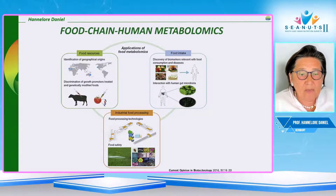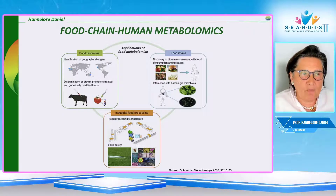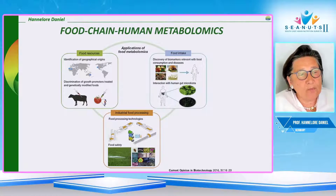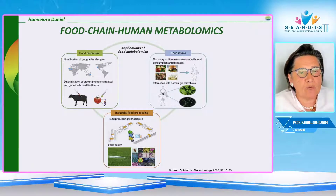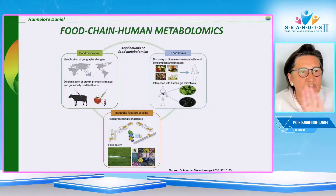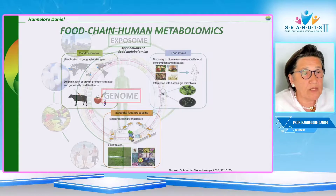Let's start. There was a paper published in Current Opinion of Biotechnology in 2016 saying that metabolomics could be a new fantastic toolbox that allows assessing the production of food material in terms of raw materials and food crops, but it could also be applied to industrial food processing and, in the end, to human nutrition — assessing food intake on one side but also assessing the context of food, diet, and health.